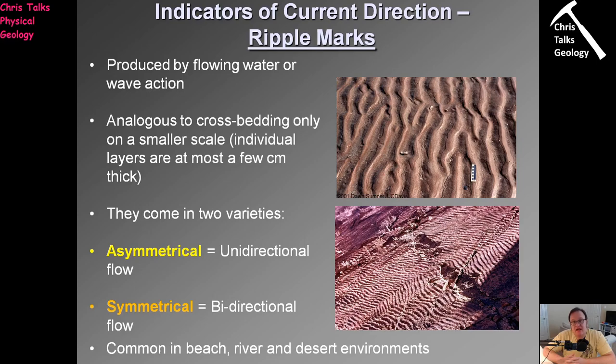We've just discussed how crossbeds are helpful in telling us the direction in which sediment is being transported. The question becomes: are there any other things that can help us work out which direction sediment is moving? The answer is yes. Dunes are meter-scale structures, but there are also smaller structures we can see in the form of ripples. Ripple marks are essentially the result of sediment being transported — these are centimeter-scale features rather than meter-scale, produced by the movement of water or the wind.